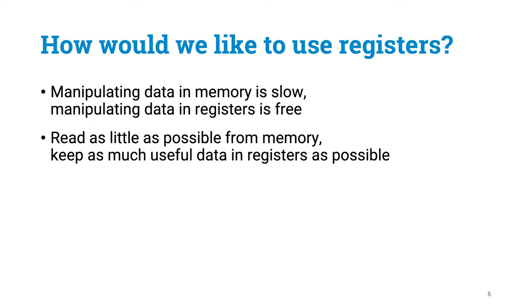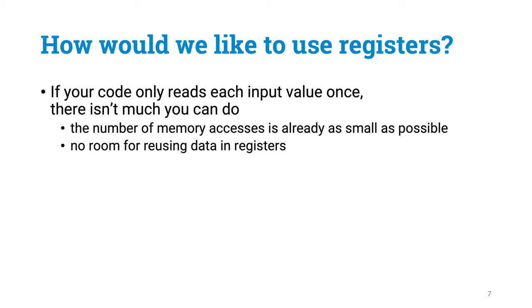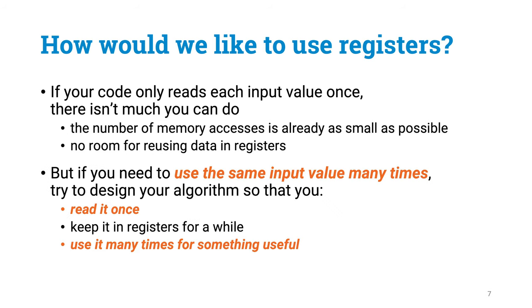So what is the general strategy here? Memory is slow, registers are fast. We want to minimize memory references. And to do that, we can try to keep as much useful data in registers as possible. Now, if your code only reads each input element once, there isn't really anything you can do. You have already got the smallest possible number of memory reads. Sometimes this happens. But in many programs you will need to use the same input value many times. And whenever this happens, there is at least some potential for reducing the number of memory reads. Maybe you could redesign your program so that you read a value only once, keep it in registers for a while, and use it many times for something useful before you throw it away.